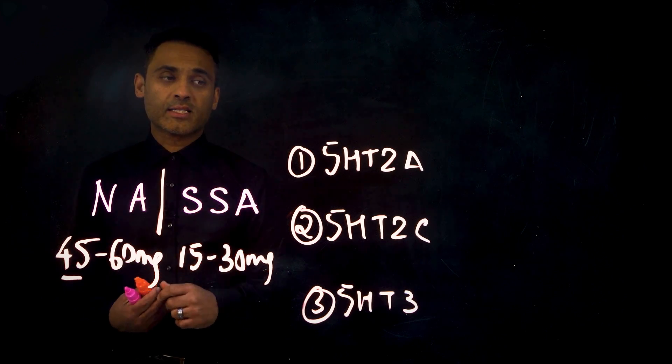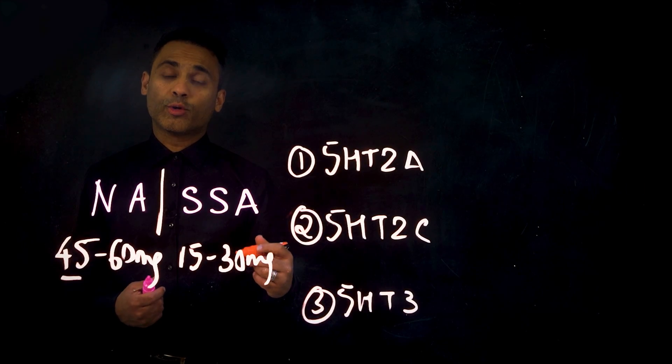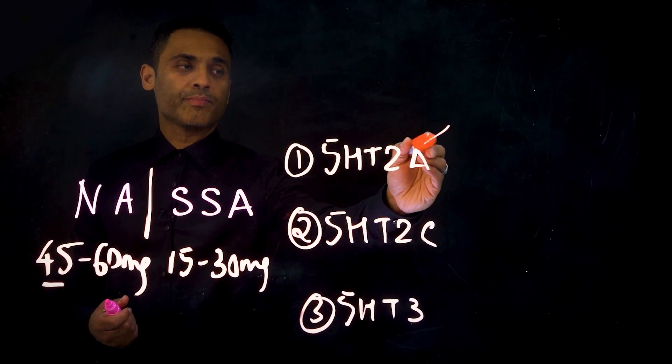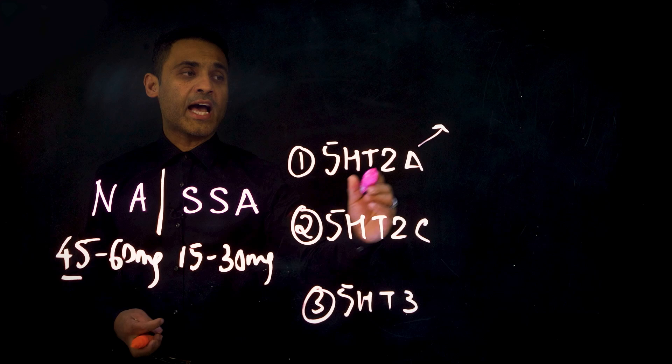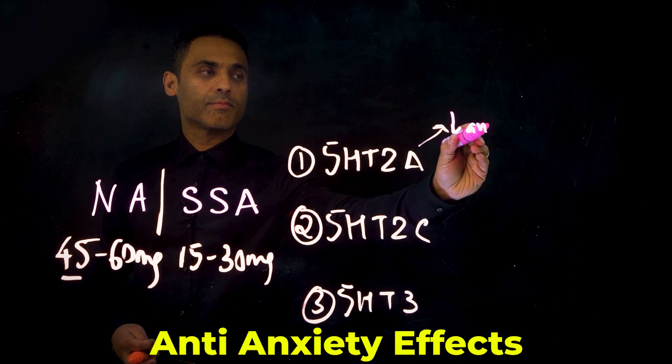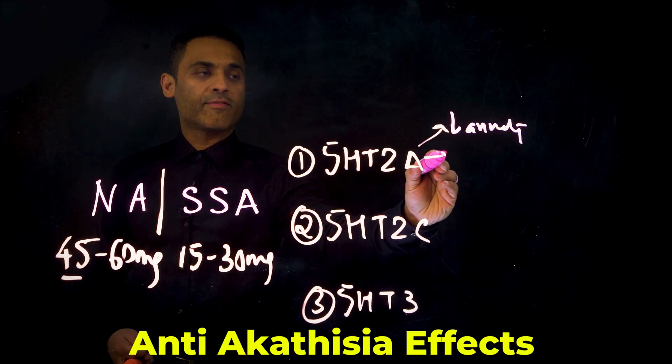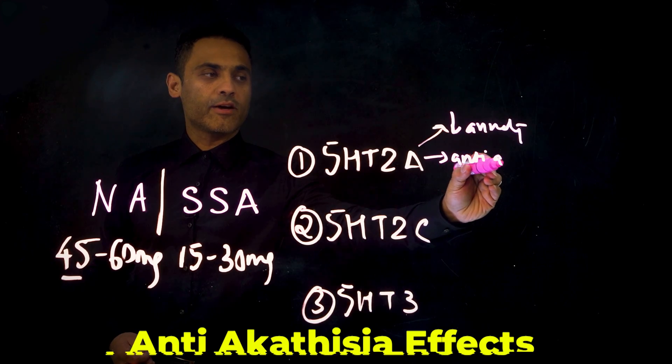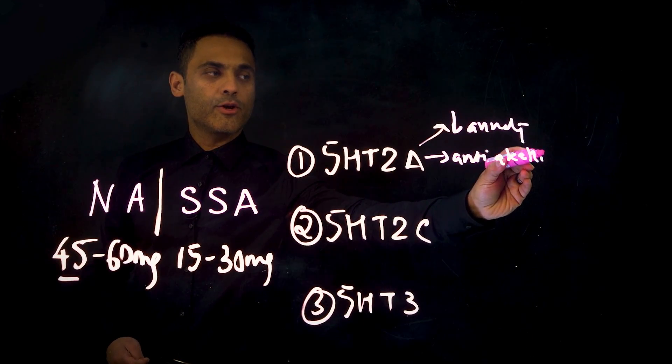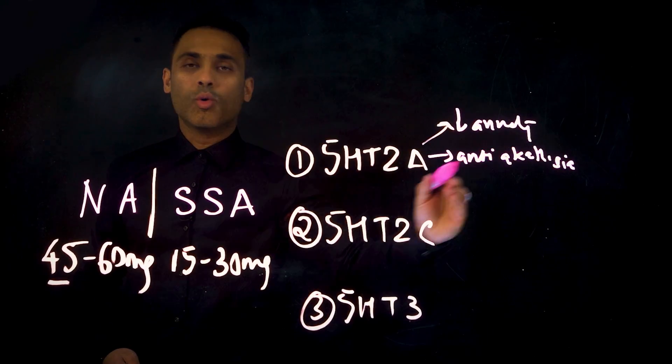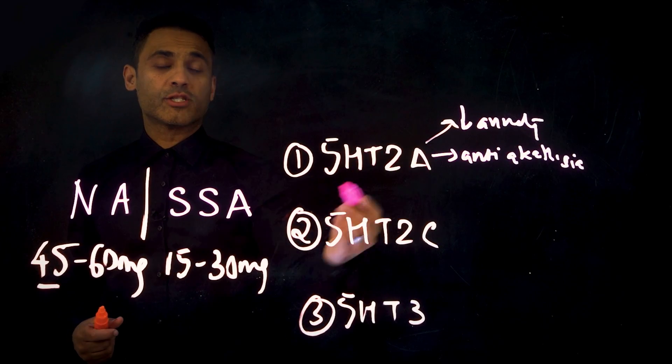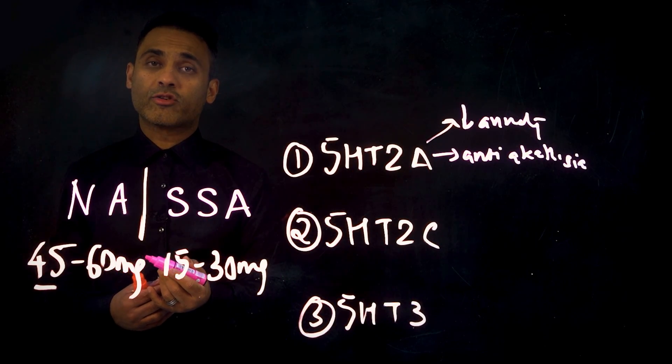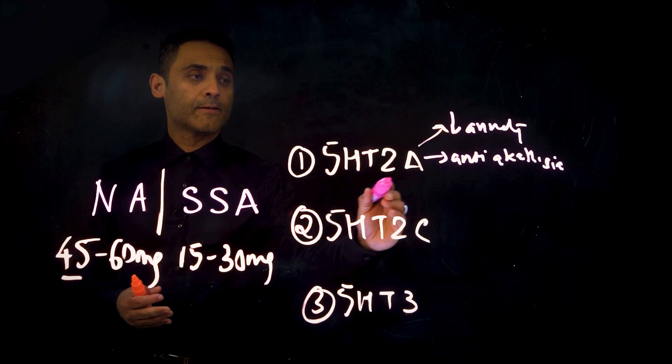What mirtazapine does is it blocks all three of these receptors. Therefore, these are the benefits that are obtained. By blocking the 5-HT2A, we have anti-anxiety effects. We have anti-akathisia effects. Note, there is no emotional blunting because there is no blockade of the ventral striatum dopamine release.